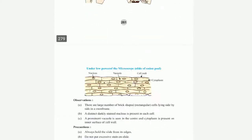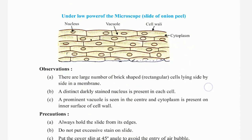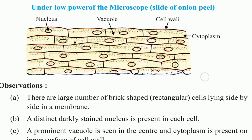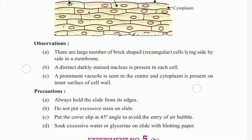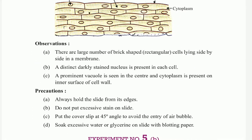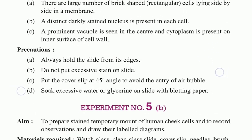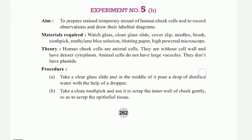Experiment 5 continued. Under low power of the microscope, the slide of onion peel shows nucleus, cell wall, and large brick-shaped cells lying side by side under the microscope.